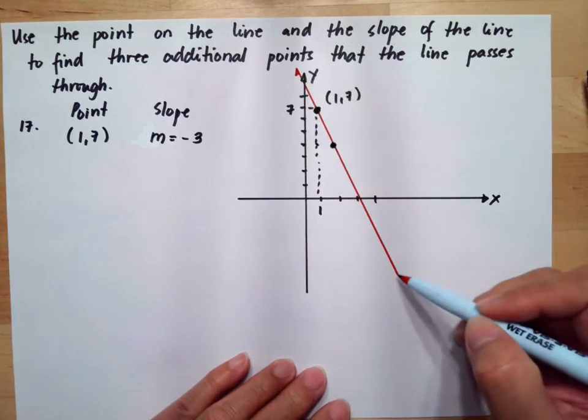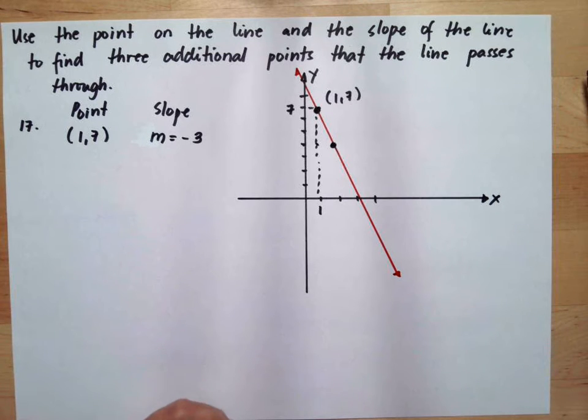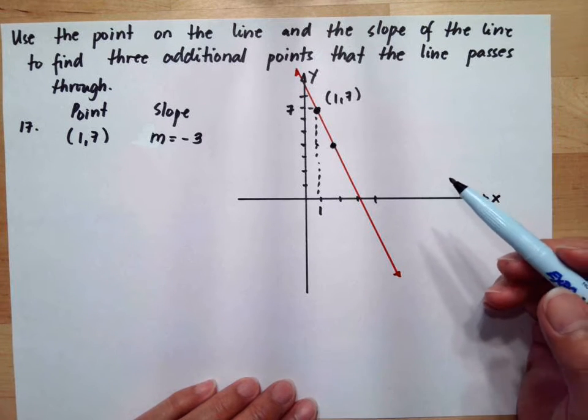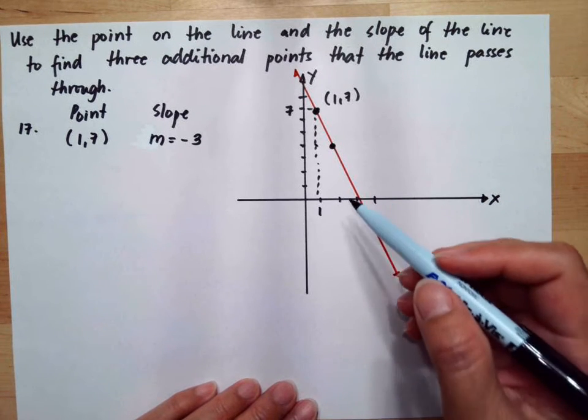Now you can get the additional points by graphing, but if you don't graph in proportion, there is a possibility that you will make mistakes. But there's another way that we can do this.